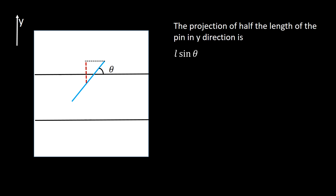So how can we proceed? This is the magnified view of your notebook with horizontal lines and the y-axis shown. Let us assume that your pin lands on this page making an angle theta with one of the horizontal lines. Now let us figure out the projection of half the length of the pin in the y direction. This red broken line represents that projection, and it has to be L sin θ, where L represents 1 centimeter — that is, half the length of the pin — the distance from the center of the pin to one of its edges.